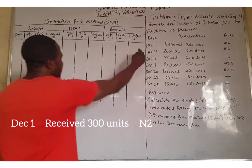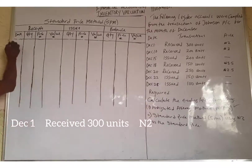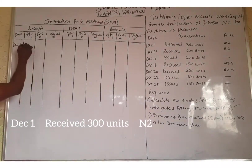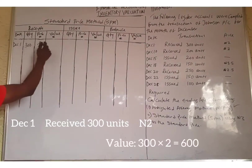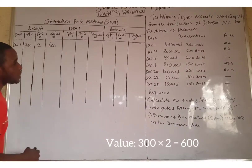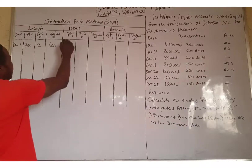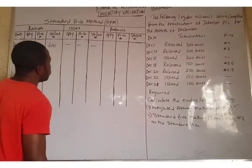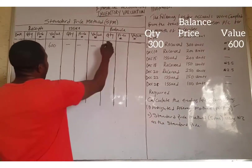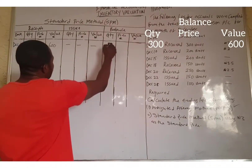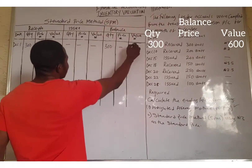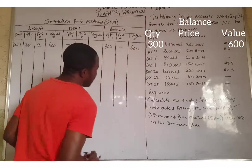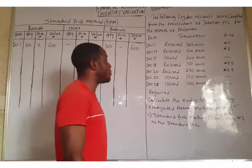The first transaction is December 1. They received 300 units at a price of ₦2. 300 times 2 equals ₦600. There is no issue on that day, so we have 300 units under the quantity and ₦600 under the value. That is the balance for the 1st of December.